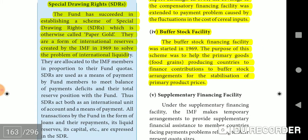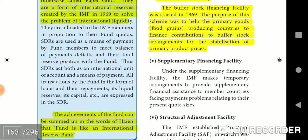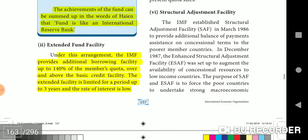Buffer Stock Facility: The Buffer Stock Financing Facility was started in 1969. Its purpose was to help primary goods and food-producing countries finance contributions to buffer stock arrangements for the stabilization of primary product prices.